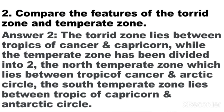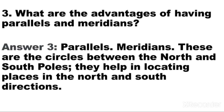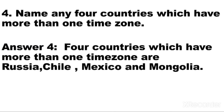Question number 2: Compare the features of the Torrid Zone and the Temperate Zone. Answer: The Torrid Zone lies between the Tropics of Cancer and Capricorn, while the Temperate Zone has been divided into two. The North Temperate Zone lies between the Tropic of Cancer and Arctic Circle. The South Temperate Zone lies between the Tropic of Capricorn and Antarctic Circle. Question number 3: What are the advantages of having parallels and meridians? Answer: Parallels and meridians are the circles between the North and South Poles. They help in locating places in the North and South directions. Question number 4: Name any 4 countries which have more than one time zone. Answer: Russia, Chile, Mexico and Mongolia.